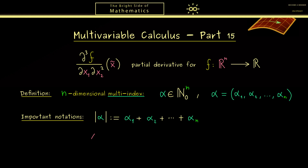The multi-index notation is also useful when you deal with a vector x in ℝⁿ, because we can simply define x to the power alpha. So we have a vector in ℝⁿ and the exponent is a multi-index alpha. We define this as a product of normal powers: first x₁ to the power α₁ — a real number to the power of a natural number or zero, which is well defined — then multiply by x₂ to the power α₂, and so on up to xₙ to the power αₙ.